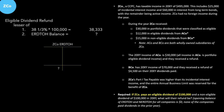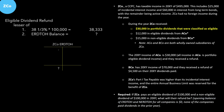We know the opening balance is zero for all companies' RDTOH accounts, indicated with a dash. During the year, ZEDCO received $30,000 in portfolio dividends classified as eligible. The math: $30,000 × 38⅓% equals $11,500 for the Part 4 taxes on those portfolio dividends.